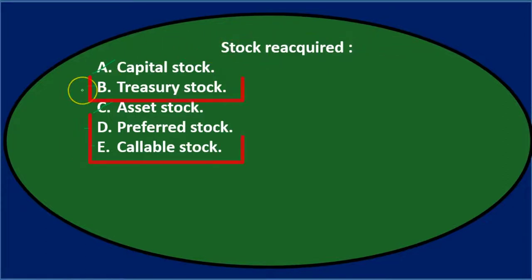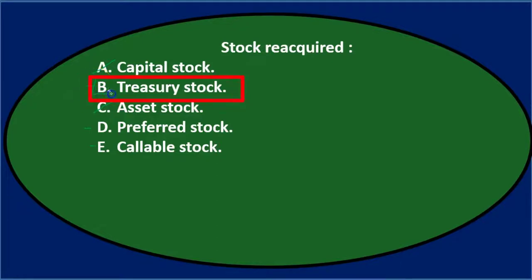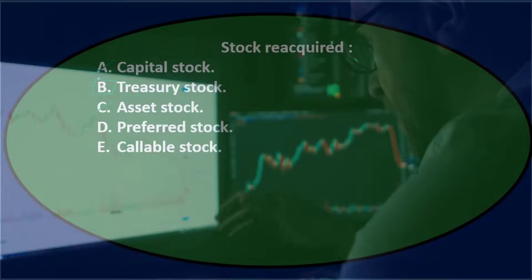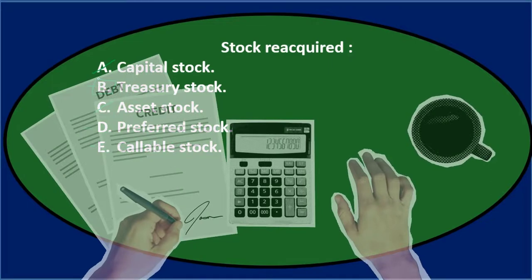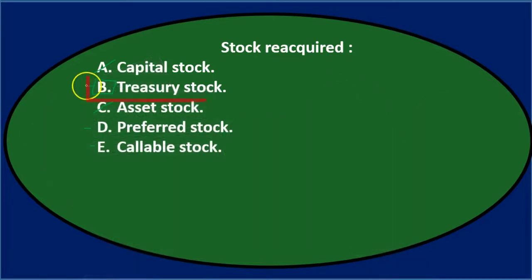Of treasury stock, preferred stock, and callable stock, you just need to know the term. It's going to be treasury stock. Treasury stock is what we buy back — if the company issues stock and then purchases its own stock back, we debit treasury stock, which is a contra equity account in the equity section, and credit cash for that purchase. It's us owning our own previously-issued stock. Final answer: B — stock reacquired is treasury stock.